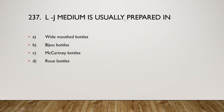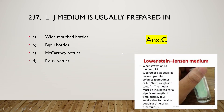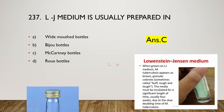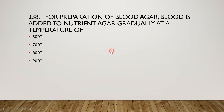Next question: LJ medium is usually prepared in wide-mouthed bottles, Bijou bottles, McCartney bottles, or Roux bottles? The right answer is option C — McCartney bottle. Lowenstein-Jensen medium: when Mycobacterium tuberculosis is grown on LJ medium it appears as brown granular colonies, sometimes called buff, rough, and tough. The media must be incubated for several weeks due to the slow doubling time of Mycobacterium tuberculosis.